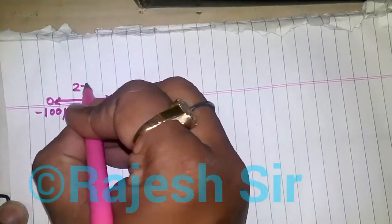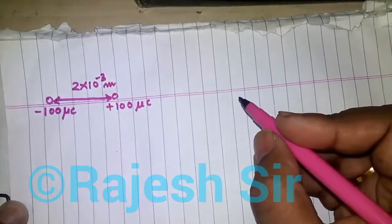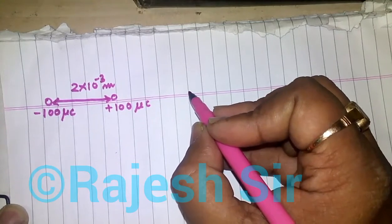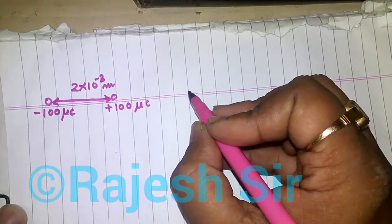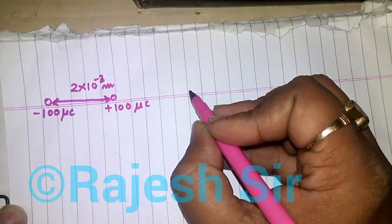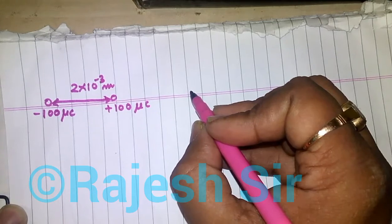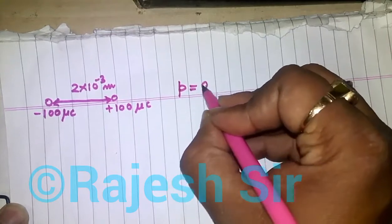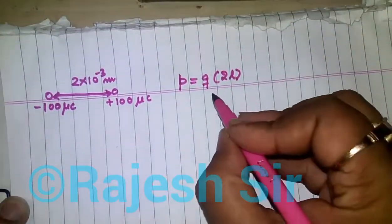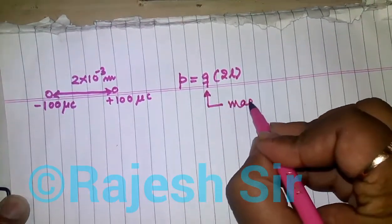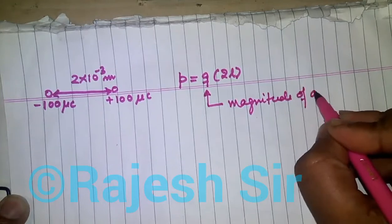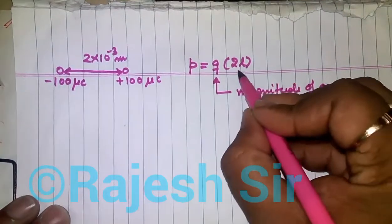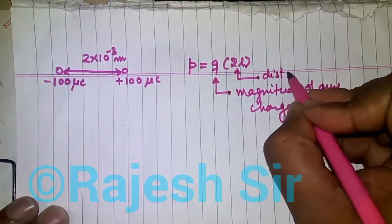Both charges are separated by a distance of 2×10⁻³ meter. Remember, two equal and opposite charges form an electric dipole. These two charges are equal in magnitude and oppositely directed, so they constitute a dipole. The dipole moment is defined as the magnitude of the charge multiplied by the length of the dipole axis, symbolically 2l, where 2l is the distance between the charges.